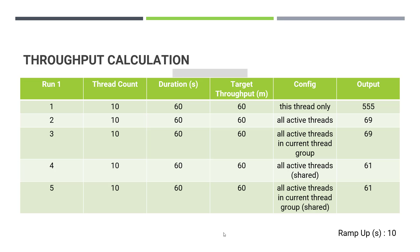Otherwise, you will end up with more or, if you have an underpowered machine, you will end up receiving very low throughput. Not just your machine's resources — even if you have timers or other highly influential elements in your test plan, those will also affect your total throughput.